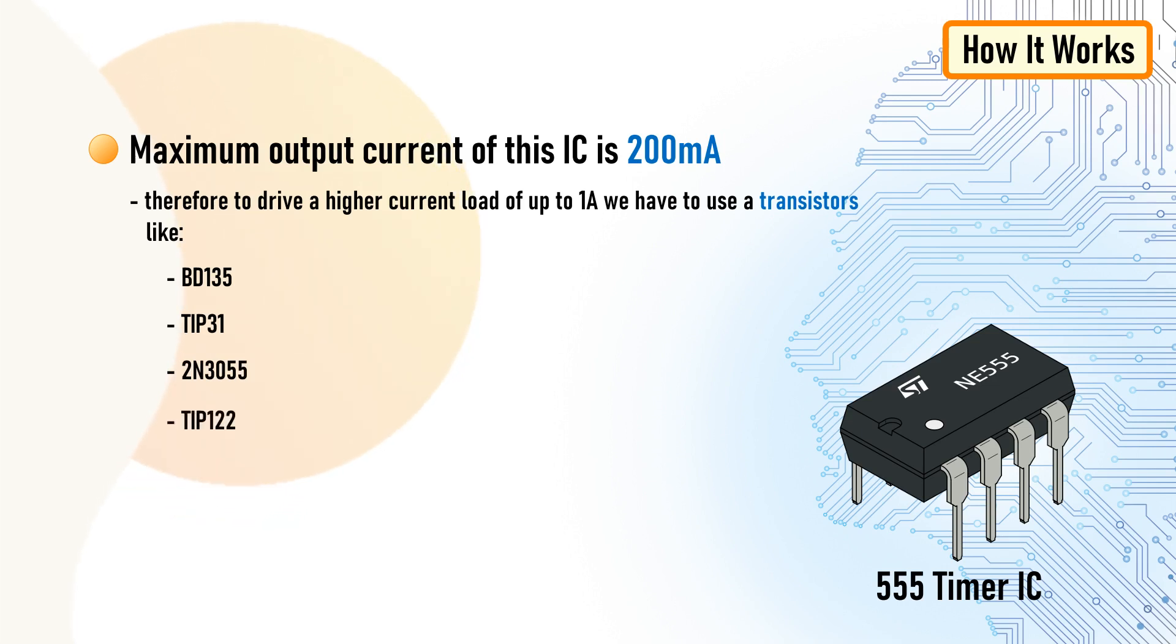TIP122 can only go up to about 1.5 amps without a heat sink. However, it can go up to 5 amps with a good heat sink. IRLB8743 FET is good to run 20 amps without a heat sink.